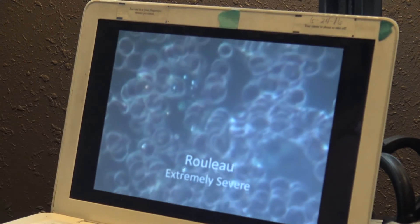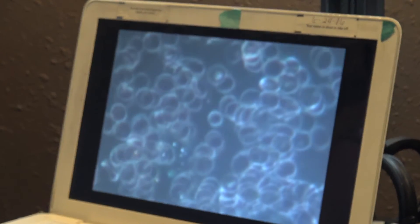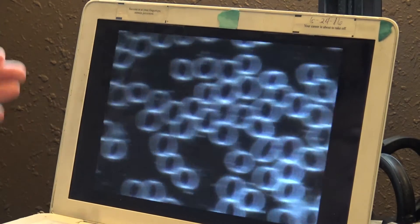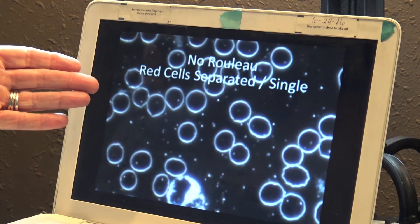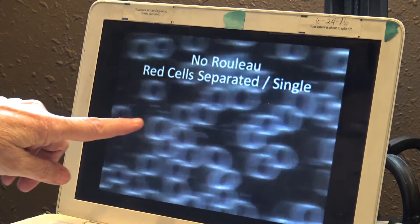So this is an extremely severe case of what they call RULO in the bloodstream for this particular person. And after one session with the plant music, this is what the bloodstream looks like now. The red blood cells are the way they're supposed to be.